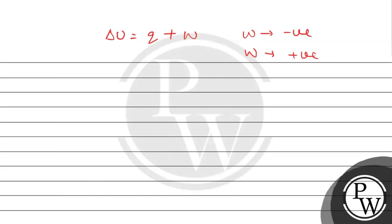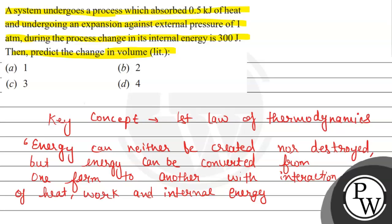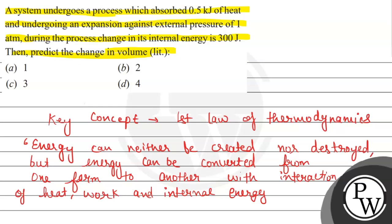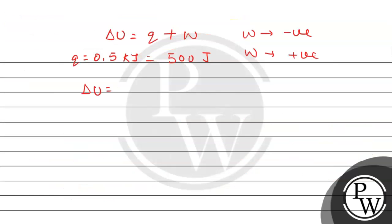Now, let us discuss more about this. According to the given question, we can see the heat absorbed is 0.5 kilojoule. So, we can write 0.5 kilojoule, and this can be converted into the joule. So, 0.5 kilojoule if we multiply by 1000, we get 500 joule. This is the heat given to us. Now, the internal energy change given is delta U, that is 300 joule given to us.